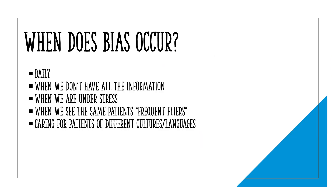When does bias occur? Bias occurs daily and sometimes minute to minute. Most of the time, bias occurs when we don't have all the information. When we don't have all the information, our brain tries to make connections to things — in ways that are incorrect — but it tries to make those connections to fill in the blanks. And sometimes those fill-ins are not accurate. Bias also occurs when we're under stress, as our brain is trying to make connections and make sense of things, and it might not always be true.